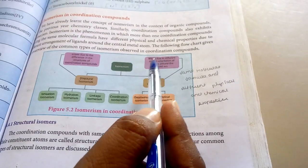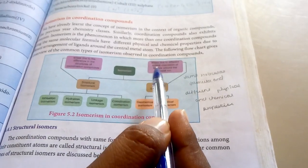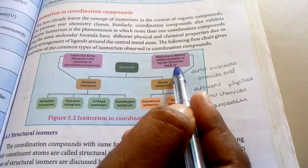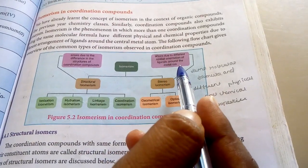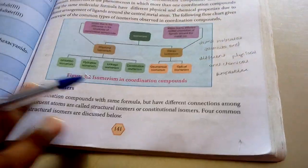Stereoisomerism in coordination compounds arises due to the different spatial orientation of ligands around the metal ion. This difference in spatial orientation of ligands around the metal ion is the defining feature of stereoisomerism.